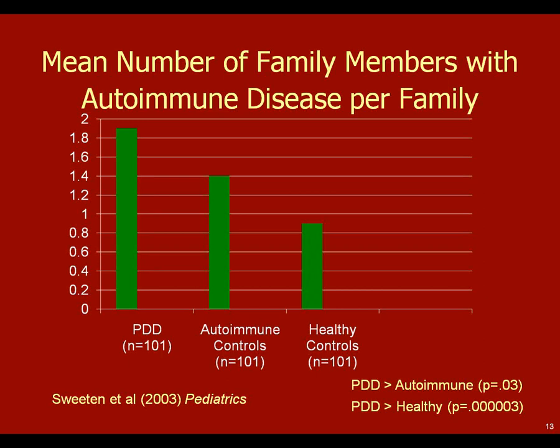In a study we published a decade ago — though not a well-designed study — we took 101 children with PDD, 101 healthy control children age-matched, and 100 children with known autoimmune disorders. We gave their parents a sheet listing autoimmune disorders and asked which first and second degree relatives had one. The number of relatives with autoimmune disease was much higher in the PDD group, even more so than relatives of children with known autoimmune disorders, and certainly more than healthy controls.